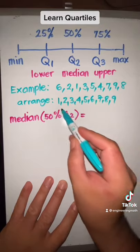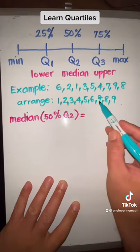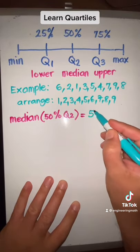The median, or the 50% quartile, is the middle number. In this case, it is 5, so 5 is the median.